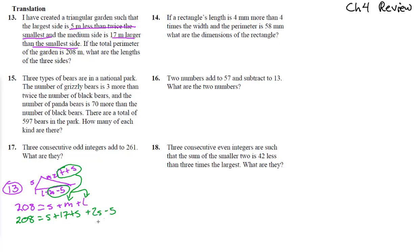We have 208 equals s plus the medium, which is 17 plus s, plus 2s minus 5. We've taken the English phrasing down into an equation with one variable. So s plus s plus 2s is 4s, and plus 12 equals 208. Subtract 12 and we have 4s equals 196, so divide and we get s equals 49.